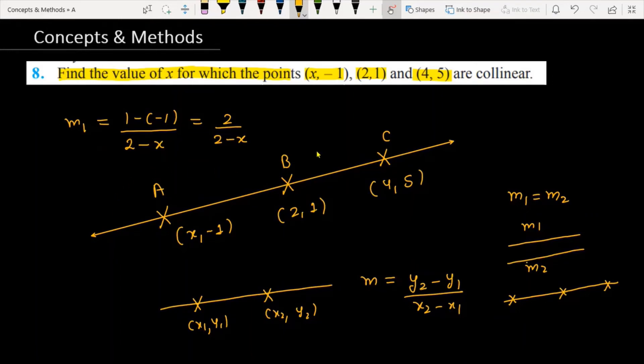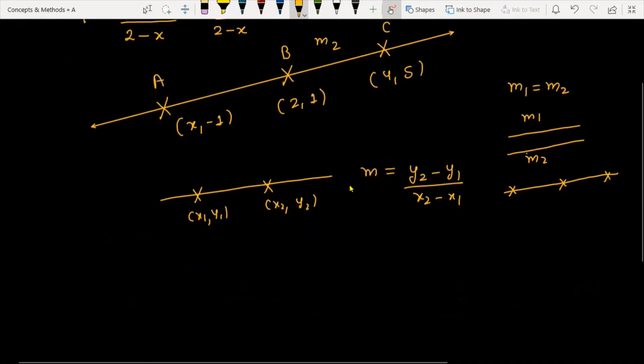Now let's find the slope of BC. We are representing this as m2. m2 is equal to (5 - 1) divided by (4 - 2), or you can say this equals 2.